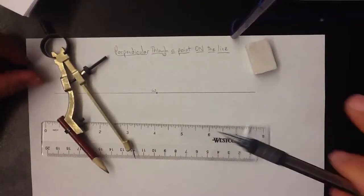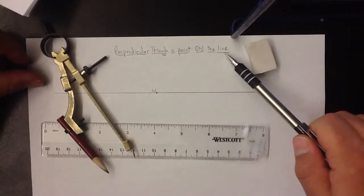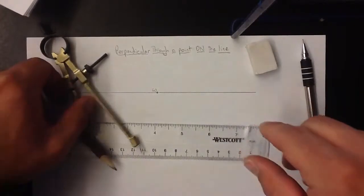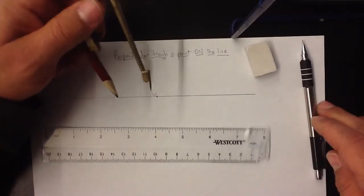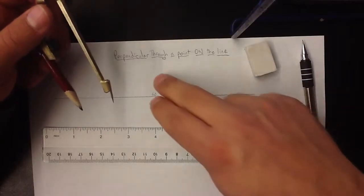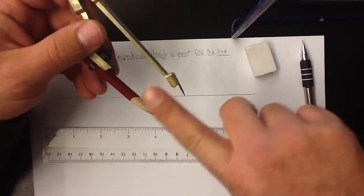To construct a perpendicular to a line through a point on the line, this is what you'll do. You start with your compass at any old setting. If it's too big, you'll end up taking up a lot of space. If it's too small, it can become inaccurate. So just any regular setting, a little bit wider than a finger.